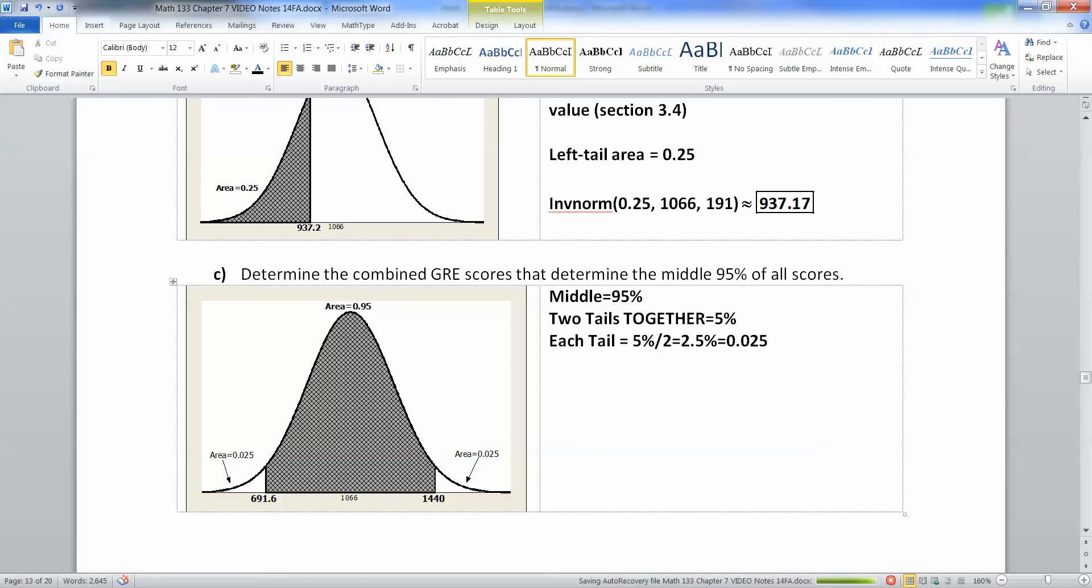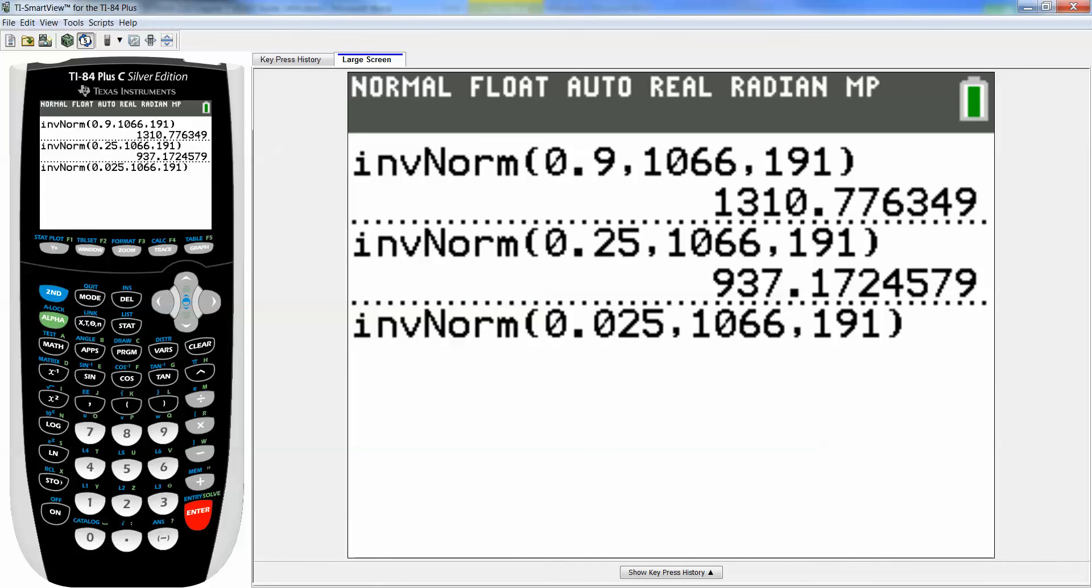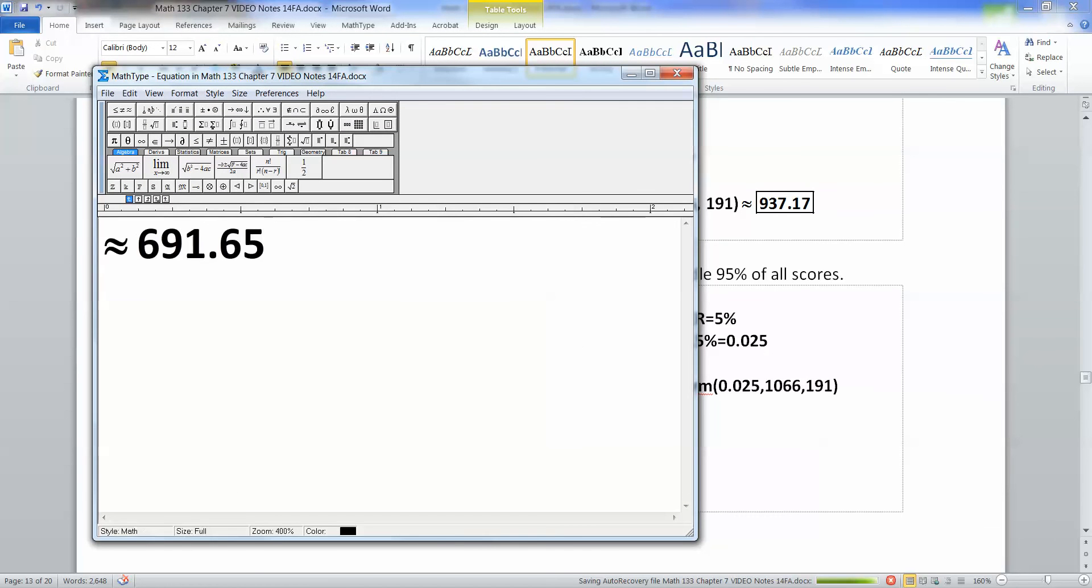Now, I need two scores. I need the left-hand score, left-hand X value. That would be inverse norm. And then if you look at the left-hand area, which is 691.6 is the score we're looking for, but that left-hand value, that tail is 0.025. It's just one of the tails. It's that little white tail. So I'm going to take the little white tail and I'm going to put that in as my left tail area. So I'm going to say 0.025, 1066, 191. And that should give me the value that's on the left and it should be less than 1066. So let me try that. So second distribution number three, 0.025, as opposed to 0.25, which is the one we did last time. And that's 691.65.